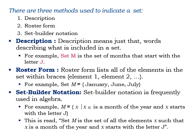Set-builder notation is frequently used in algebra. For example, M = {x | x is a month of the year and x starts with the letter J}. This is read as 'set M is the set of all elements x such that x is a month of the year and x starts with the letter J.' You are already familiar with this notation from our earlier discussions.